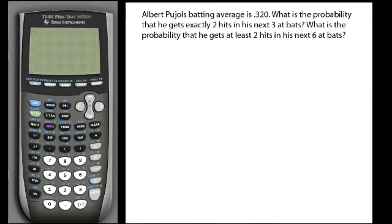Now binomial probabilities are probabilities in which there are one of two events that are going to happen, and there's going to be some repeated event. So if we look at our example here, Albert Pujols batting average is .320. We want to know what is the probability that he gets exactly two hits in his next three at bats.